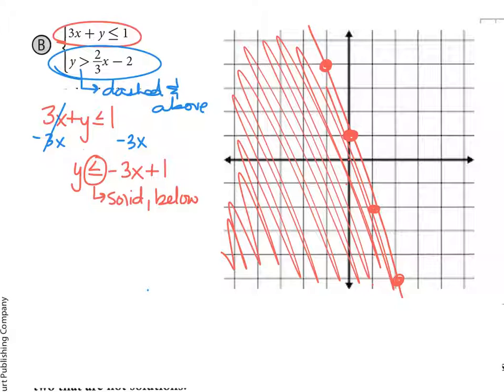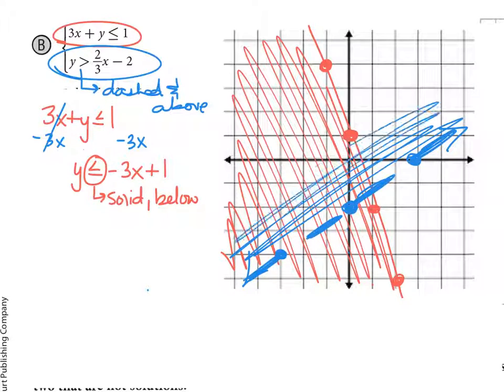So start at negative 2. We're going to do dashed, or I'm sorry, rise 2, run 3, down 2, backwards 3. That's as many points as I can fit. I want this one to be dashed, and we want to shade above here.